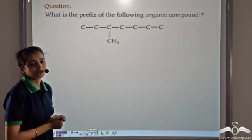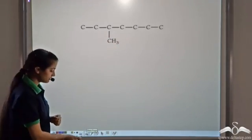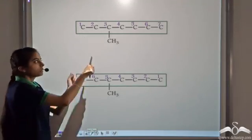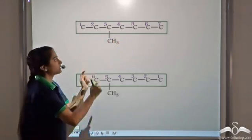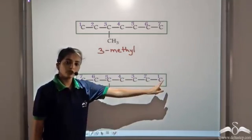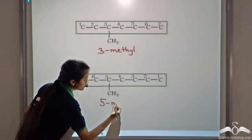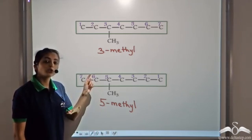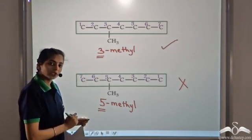Now we have another organic compound — what is the prefix? First, find the longest chain. We can number it either from the left or from the right. If we number from the left, the methyl group is at position number 3, so this becomes 3-methyl. If we number from the right, the methyl group is at position number 5, giving 5-methyl. By the IUPAC rule, we give the lowest number, so 3-methyl is correct and 5-methyl is wrong.